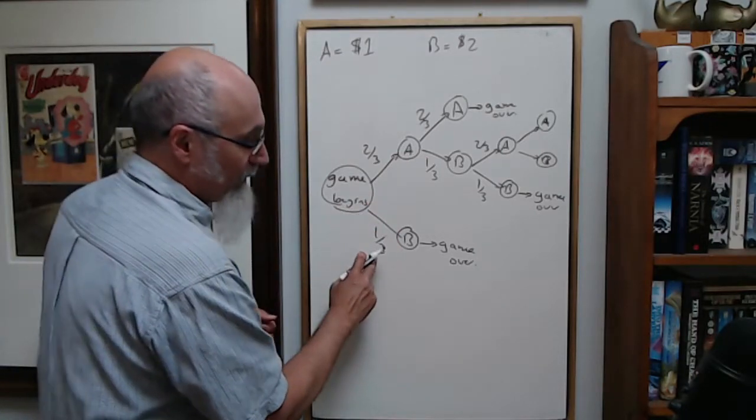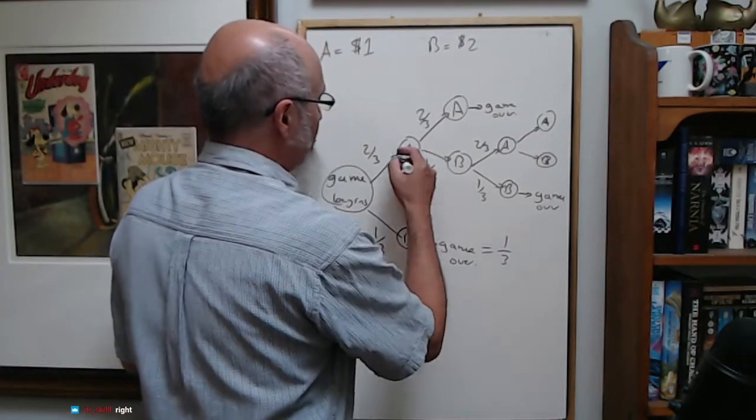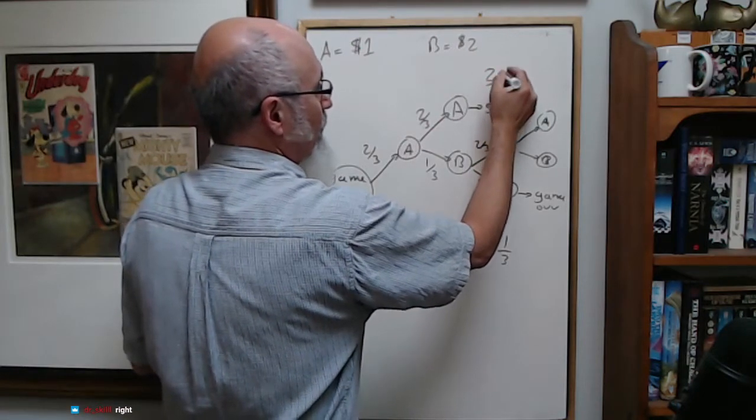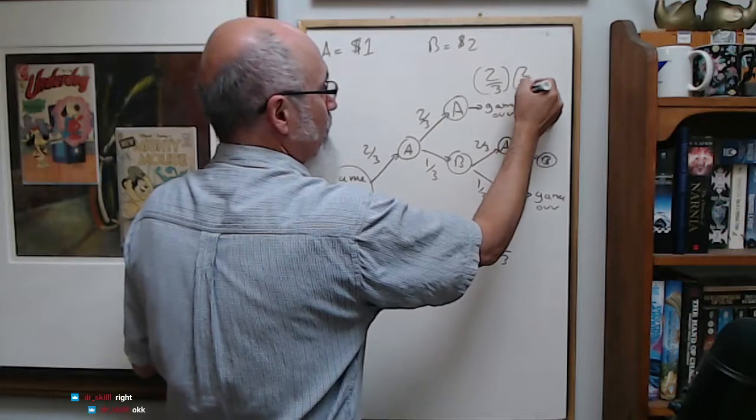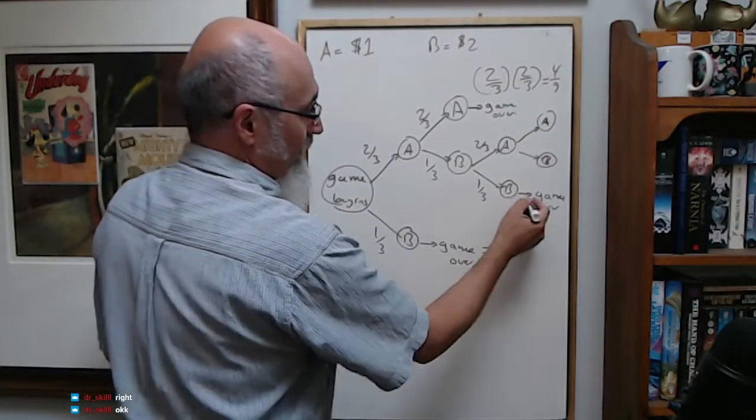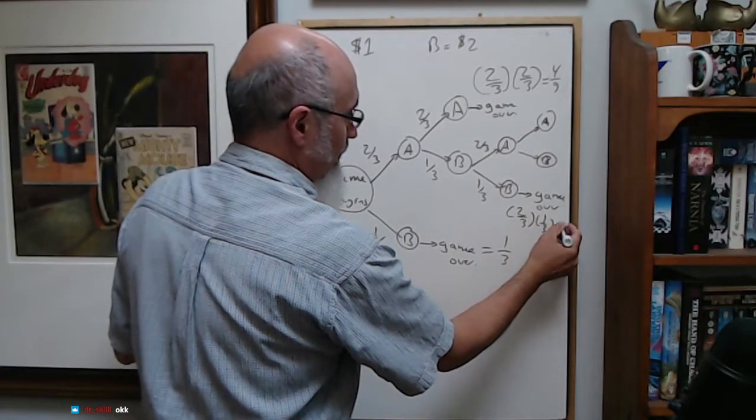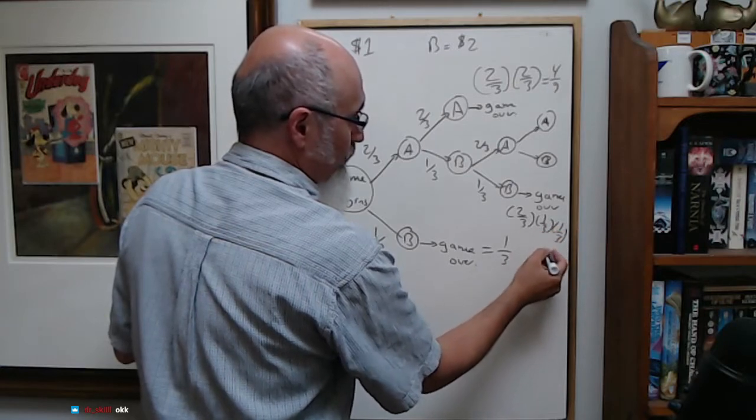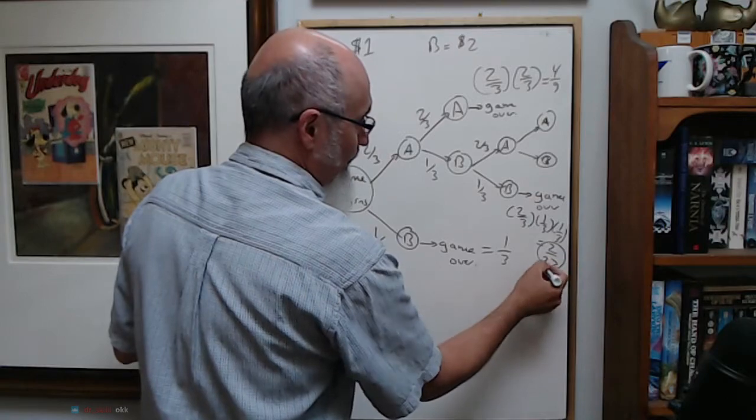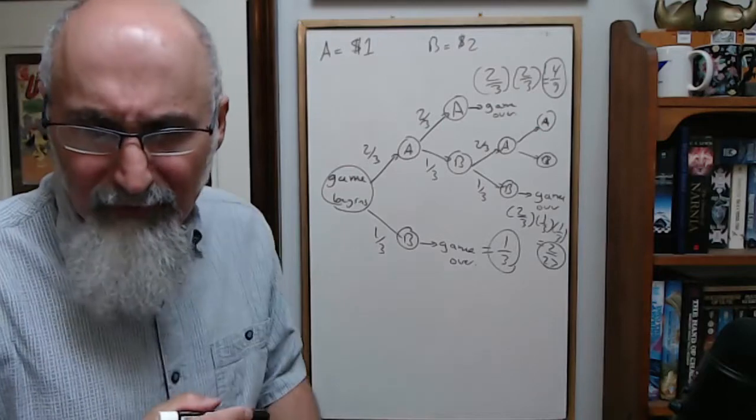I'm just going to put the question out there for people. This is game over, would be 1/3. This would be 2/3 times 2/3, which is 4/9. This one would be 2/3 times 1/3 times 1/3, which would be 2/27.